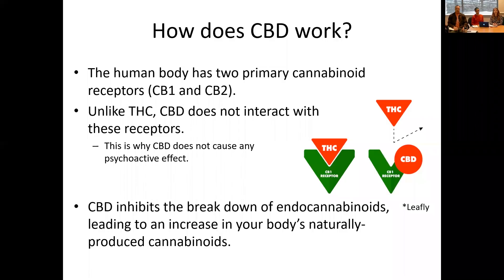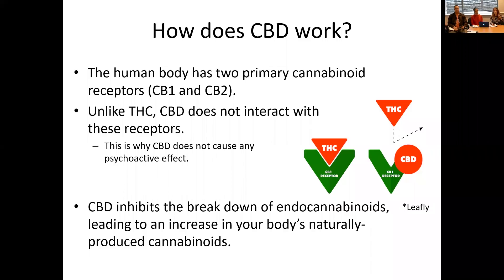The human body has two primary cannabinoid receptors, CB1 and CB2. THC binds particularly to the CB1 receptor, and that's what causes the psychoactive effect when you have high amounts of THC. However, CBD does not bind to this — it actually inhibits the breakdown of the body's naturally occurring endocannabinoids, which can lead to an increase of your body producing these beneficial cannabinoids.